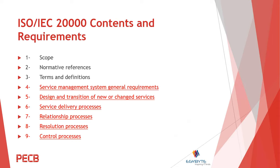ISO 20000 has nine clauses: scope, normative references, terms and definitions, service management system general requirements, design and transition of new or changed services, service delivery processes, relationship processes, resolution processes, and control processes. Clauses one through three explain the purpose of the ISO, who should use it, and definitions. Clauses four through nine contain the actual requirements that a service provider must comply with and demonstrate conformity to in order to pass the audit and achieve ISO 20000 certification.